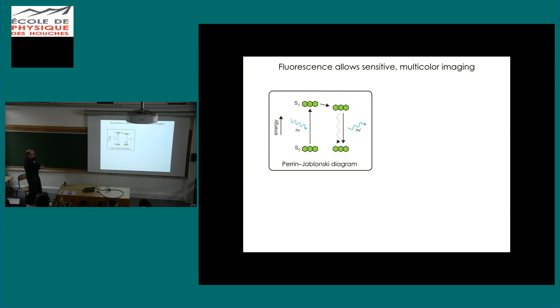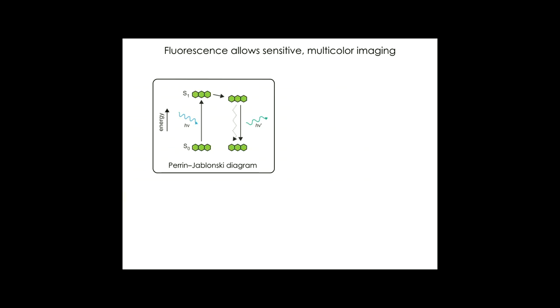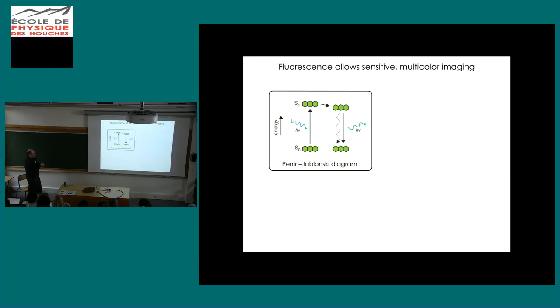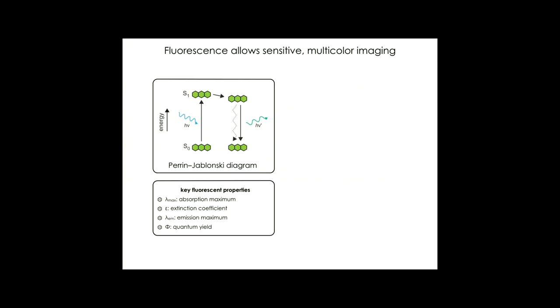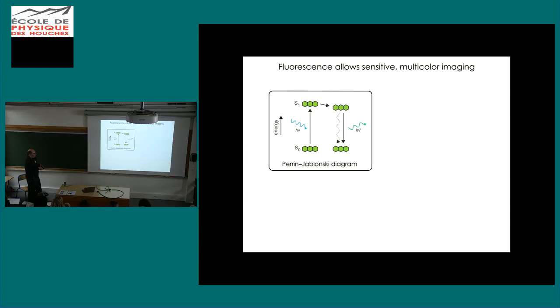So the parent Jablonski diagram, as we all know, molecules in the ground state absorb a photon. There's a little bit of relaxation, typically due to solvent reorganization. Then the molecules can relax back down to the ground state through emission of another longer wavelength photon fluorescence or through some other process. A couple of key properties for fluorophores: the absorption max, the extinction coefficient, the emission max, and the fluorescence quantum yield. The extinction coefficient times the quantum yield is often referred to as brightness.